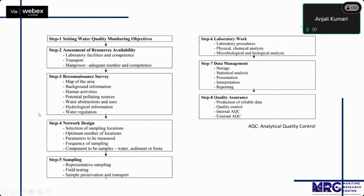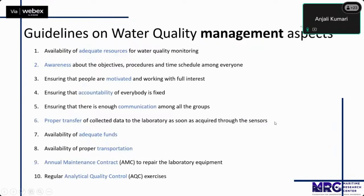Step five is sampling, which requires representative sampling, field testing, sample preservation, and transport of the sample to the laboratory. Step six is laboratory work, which includes physical, chemical, microbiological, and biological analysis of the sample. Step seven is data management, one of the most important steps, which requires good storage, statistical analysis, presentation, interpretation, and reporting of the data. Step eight is quality assessment, which includes the production of reliable data and quality control, including both internal and external controls.